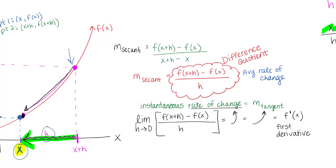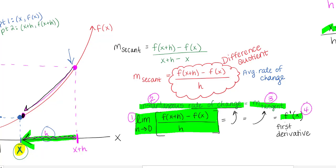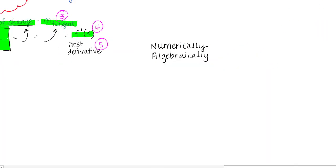This is what we'll be working on for this whole section. Sometimes people think calculus is difficult because we can refer to the same thing five different ways: limit notation, instantaneous rate of change, slope of a tangent, f prime of x, or a first derivative. We need to recognize what's being asked graphically, verbally, algebraically, and numerically — this is called the rule of four, and it's true for every math class.